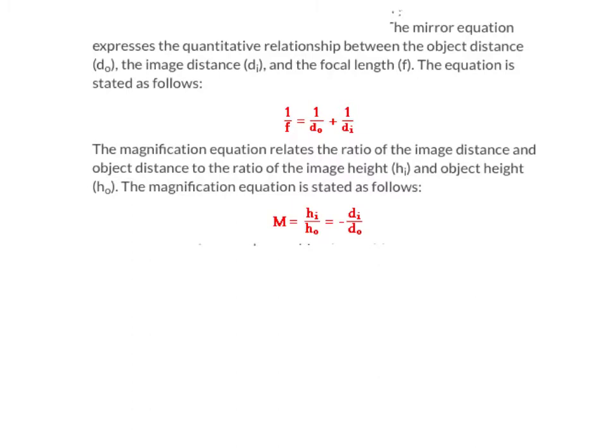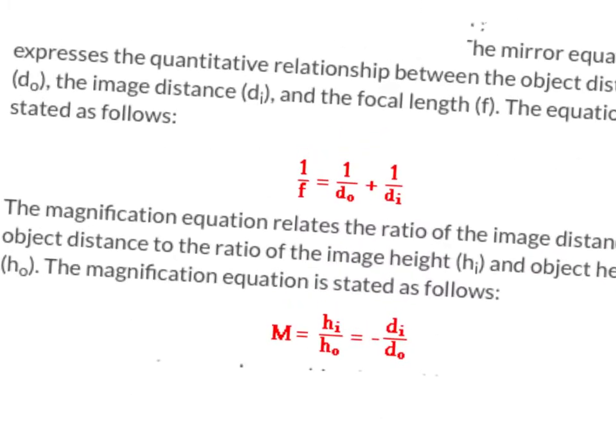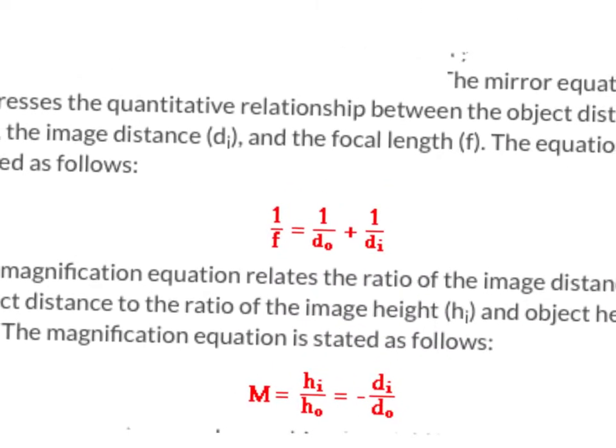All right, here we have a mirror equation. It shows where an image and an object will be located. It depends on the focal point. So if I zoom in on this, your equation is 1 over the focal point will equal 1 over the object distance plus 1 over the image distance. You'll always be given 2 out of the 3 and then you just got to solve for the third one.